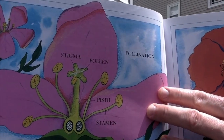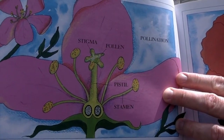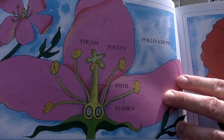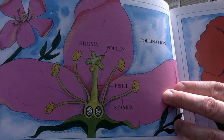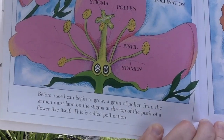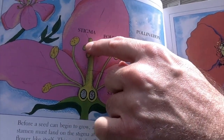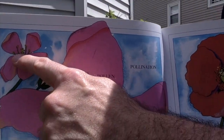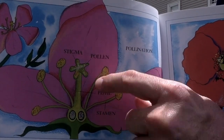Before a seed can begin to grow, a grain of pollen from the stamen must land on the stigma at the top of the pistil of a flower like itself. This is called pollination. There's the stigma — here's pollen that maybe came from this flower over here and landed on this one.